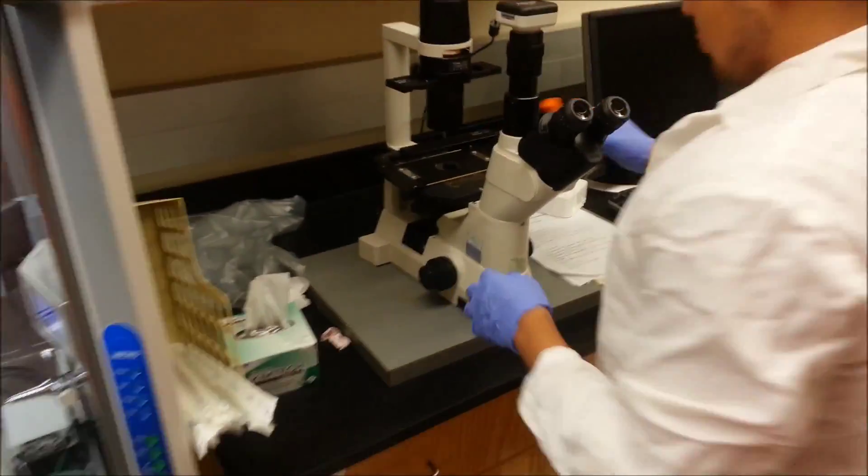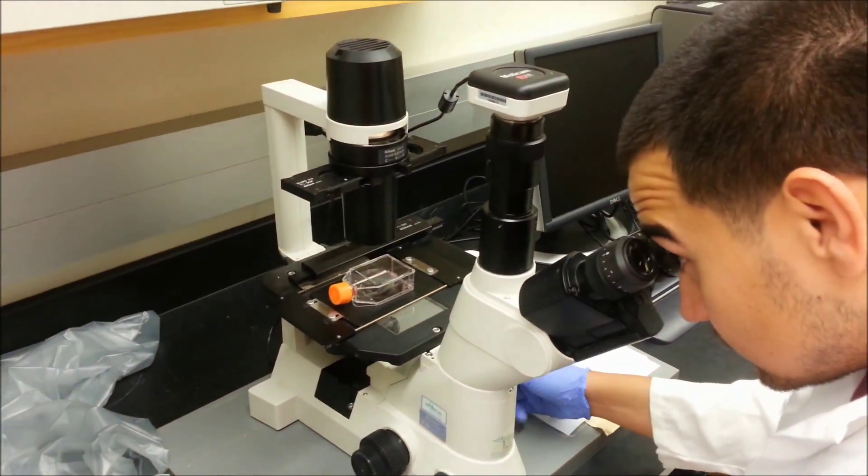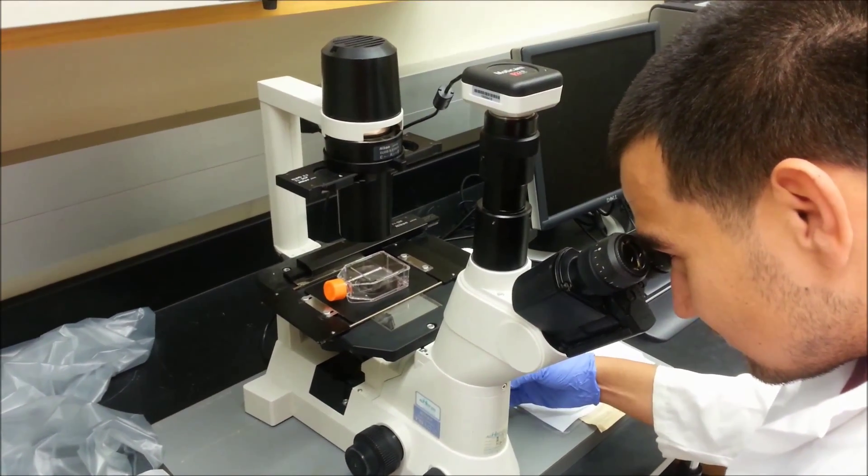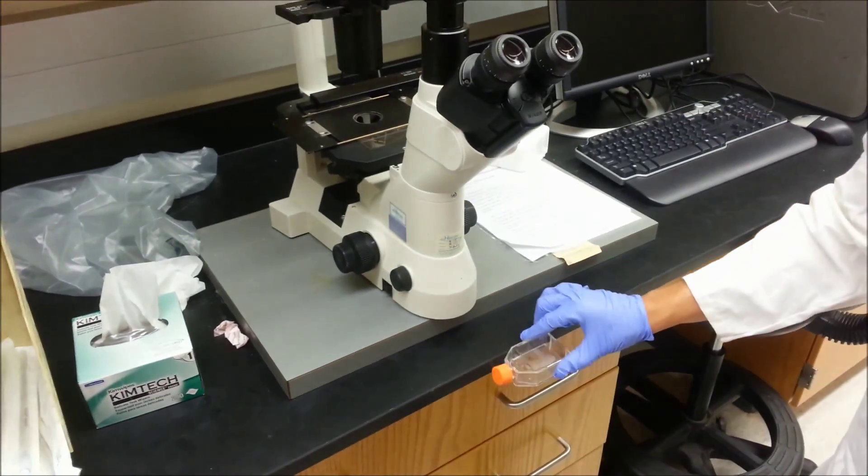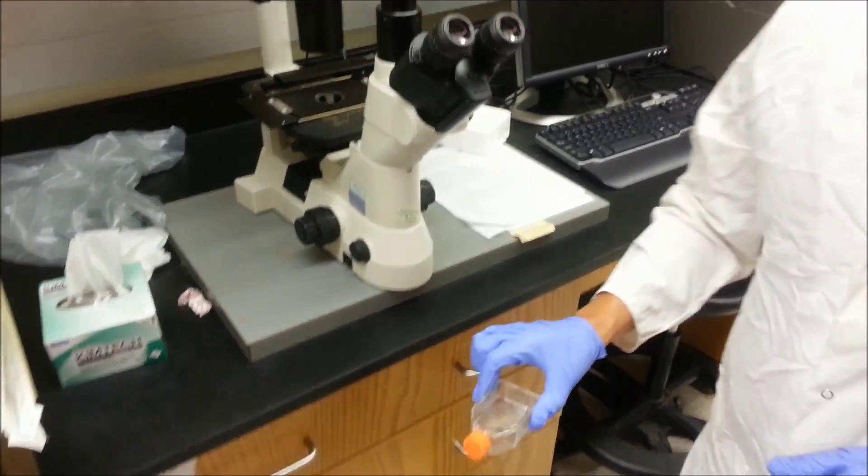Check the cells under the microscope again to ensure that they were not removed along with the trypsin. Tap the flask against a hard surface to dislodge the cells.